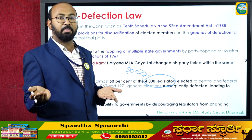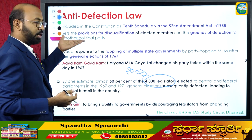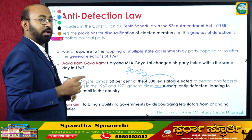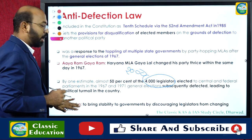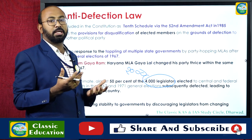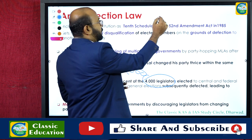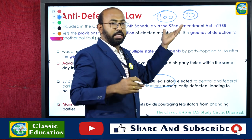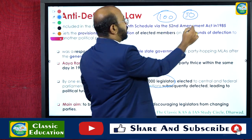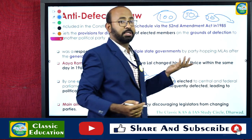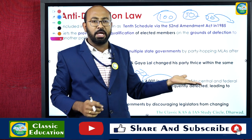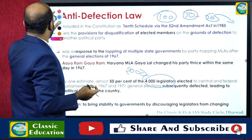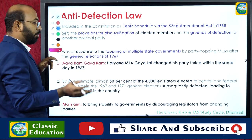People elected these MLAs and MPs from one party, but after being elected, these representatives switched parties — betraying the electoral mandate. The government thought to prevent this, and that led to the passing of the anti-defection law, the 52nd Constitutional Amendment Act. The main aim of this act was to bring stability to governments. If members defect and the ruling party loses its majority, the government collapses, leading to political instability.